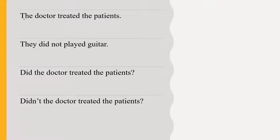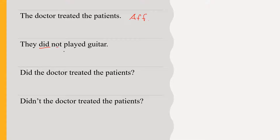Example: 'The doctor treated the patients.' This is a positive sentence, hence it is an affirmative sentence. 'They did not play guitar.' Here 'did' is used for negative sentences, and because we use the negative word 'not', it is a negative sentence.